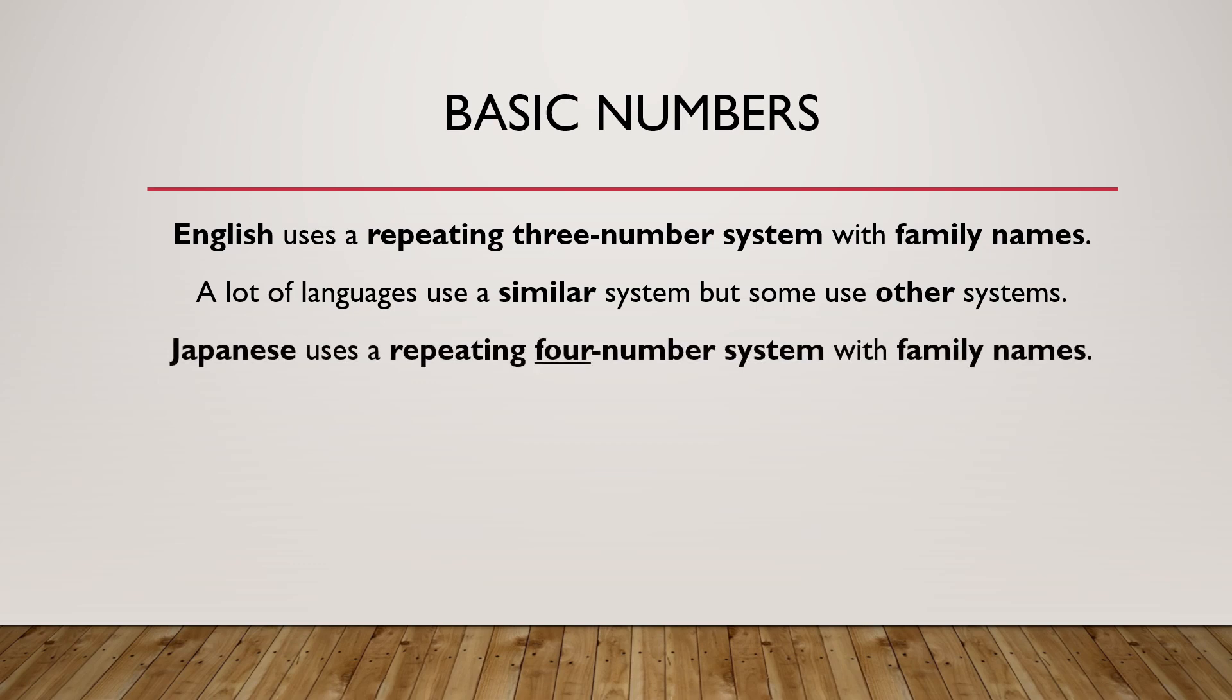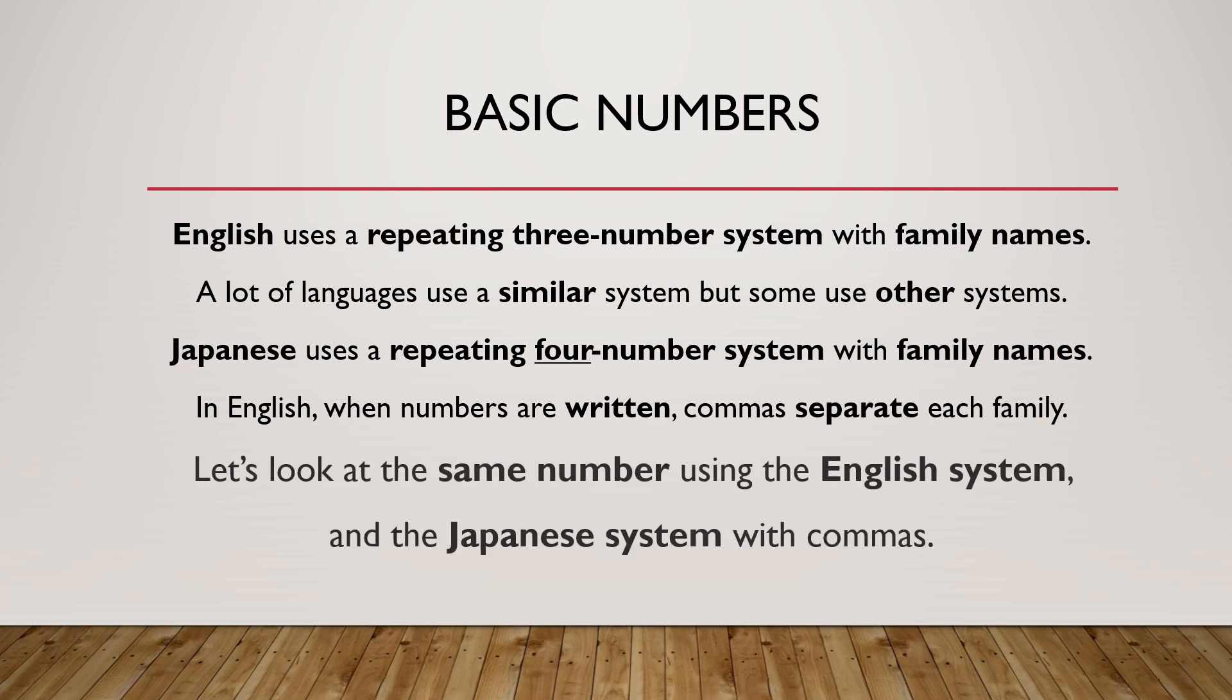Japanese uses a repeating four-number system with family names. In English, when numbers are written, commas separate each family. Let's look at the same number using the English system and the Japanese system with commas.